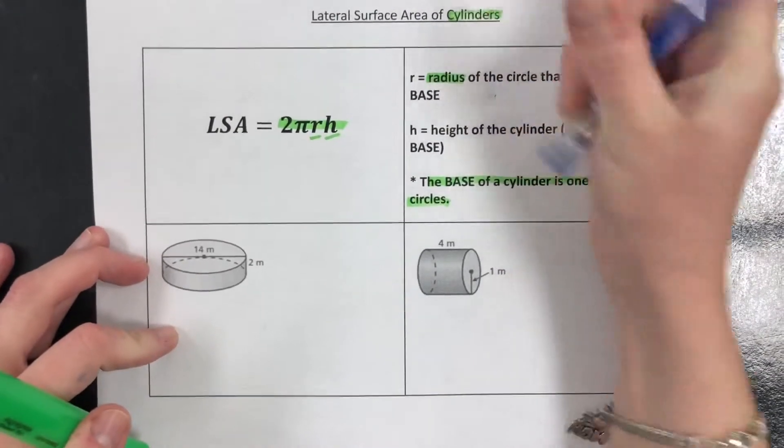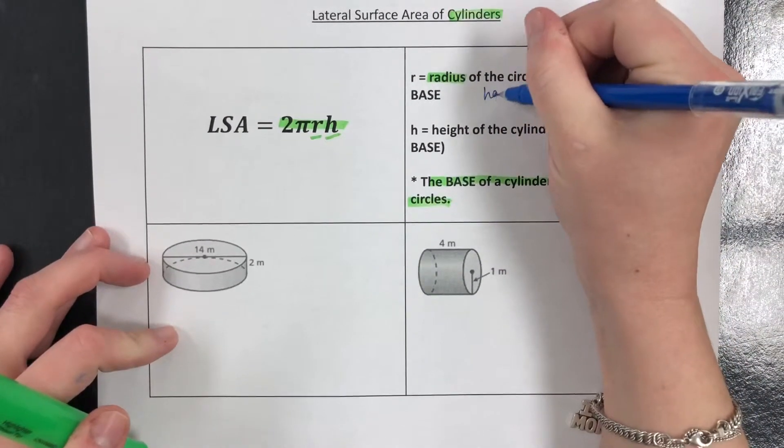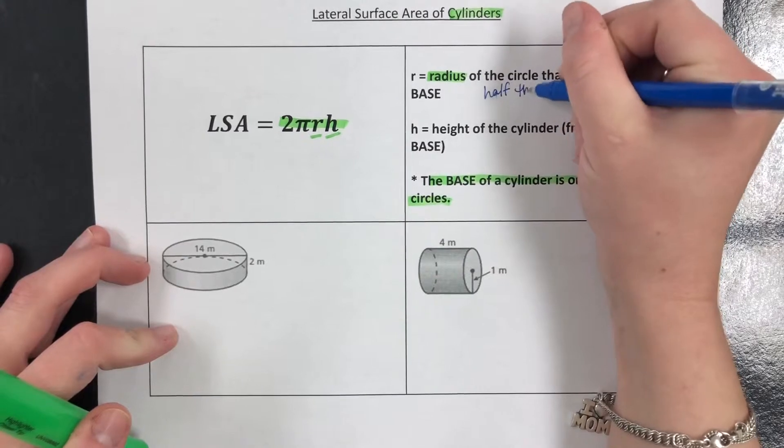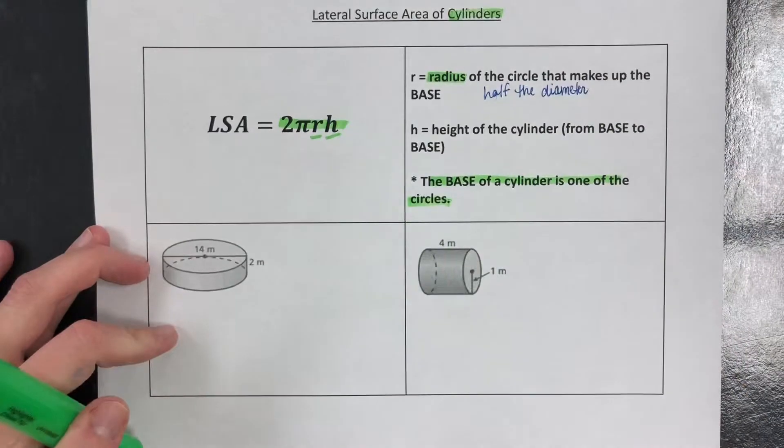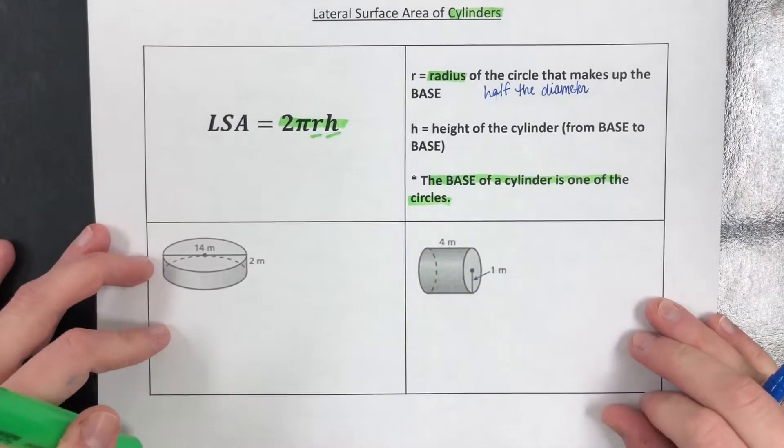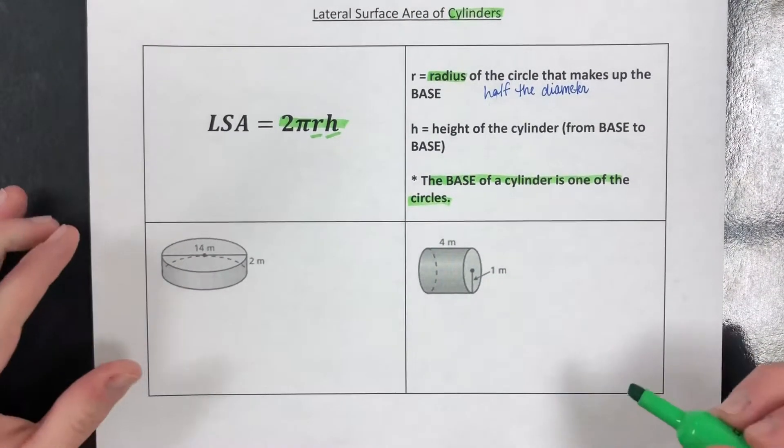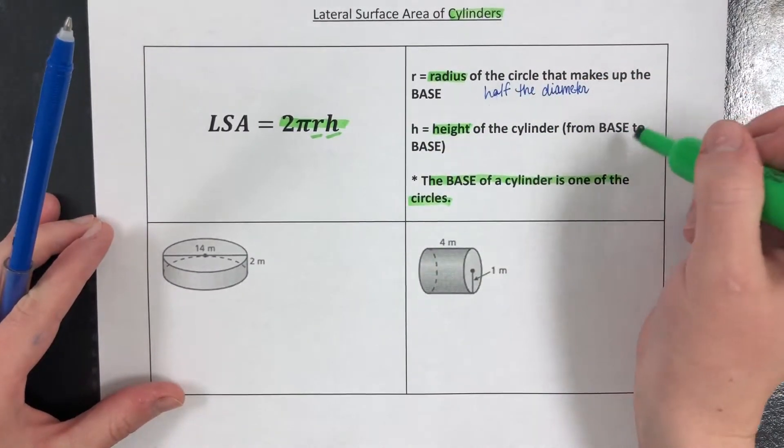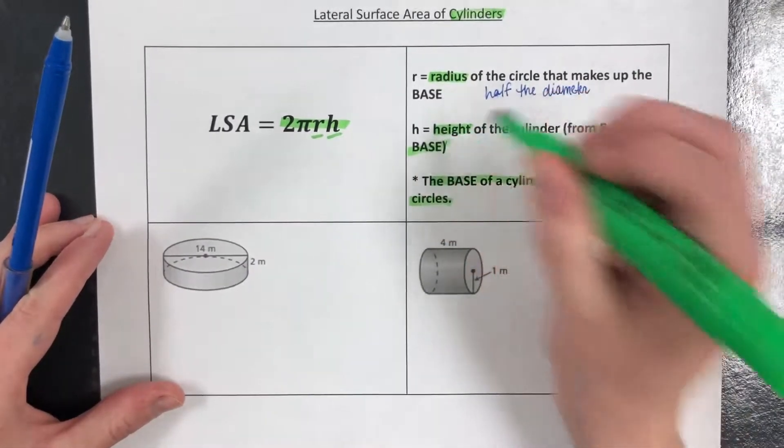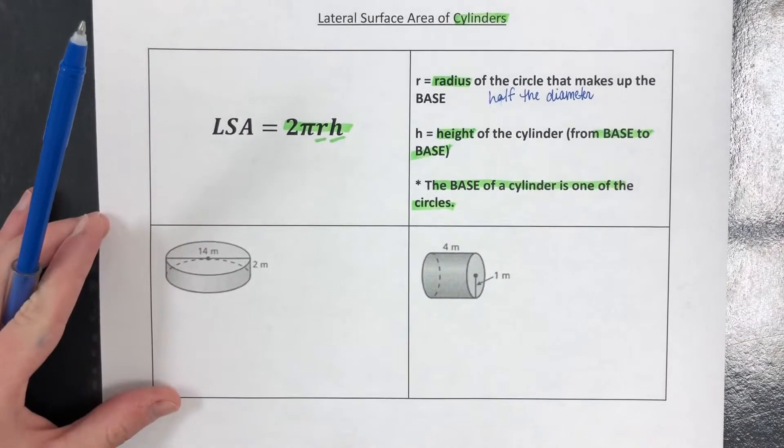Again, your base of a cylinder is one of the circles, so your radius, if you're given the diameter, your radius is half the diameter. So there's a chance you may have to divide that diameter in half to get the radius. And h, the height of the cylinder, is still from base to base, so from circle to circle.